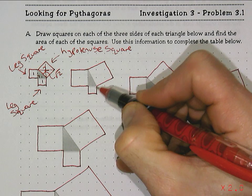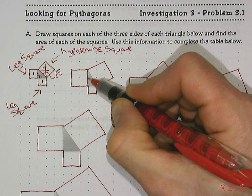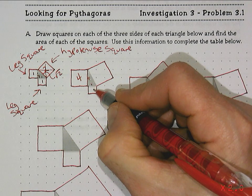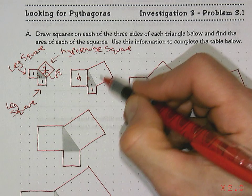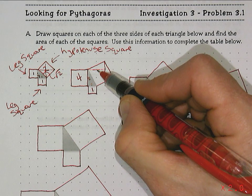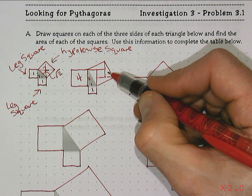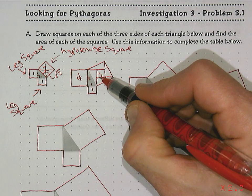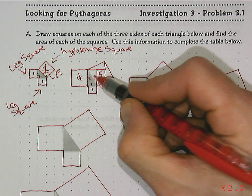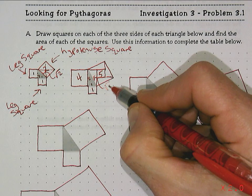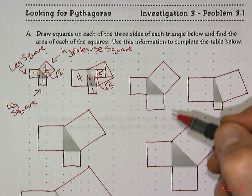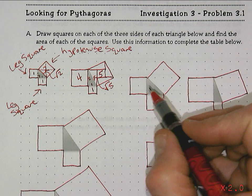Going to the next triangle and doing the same thing: this leg square has a side length of two and its area is four. This leg square has a side length of one and its area is one. Then the hypotenuse square area — cutting it up to see the parts — gives us one, two, three, four, five square units. So the area of that hypotenuse square is five, and the hypotenuse length is the square root of five.